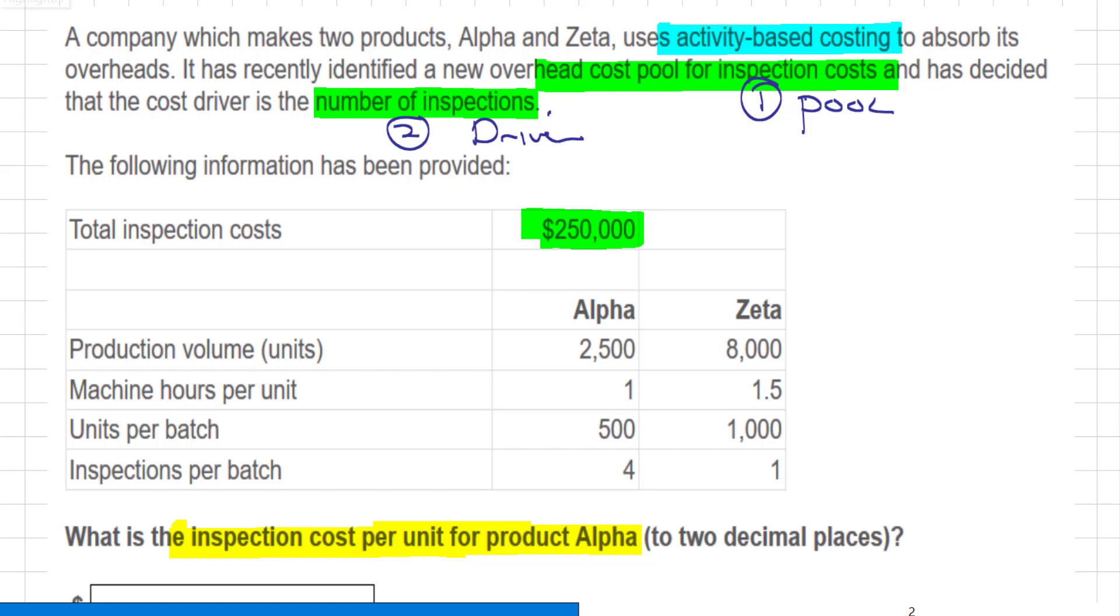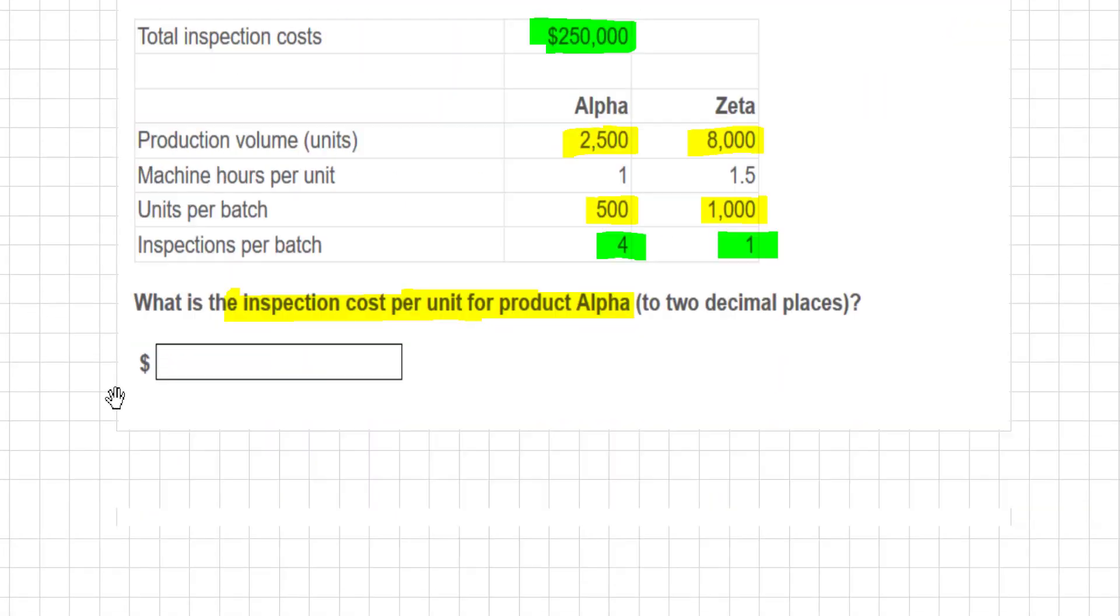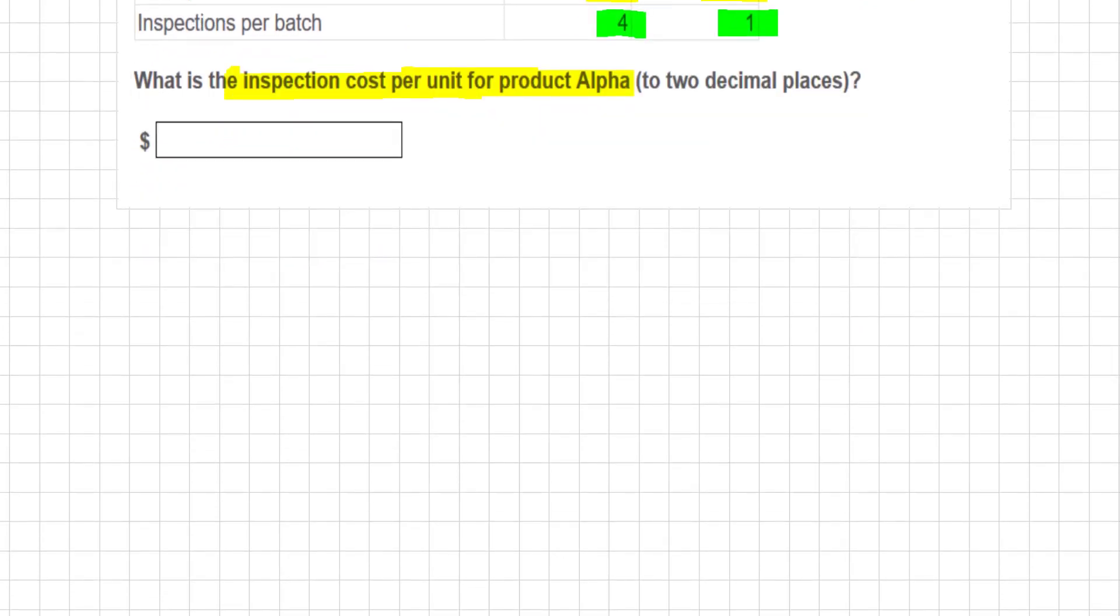Do we have the units? Yes, we do. Do we have the units per batch? Yes, we do. Therefore, we can get the number of batches by dividing by the units per batch, and multiply that by the inspections per batch to get the total number of inspections. So let's just make quick work of that.